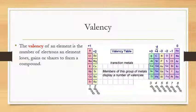An important concept touched upon in atomic structure is valency. The valency of an element is the number of electrons on the outer ring which it loses, gains, or shares in covalent bonding to form a compound. Group one has a valency of +1, group two +2, group three +3, group four ±4, group five −3, group six −2, group seven −1, and the noble gases (group zero) have a valency of zero.